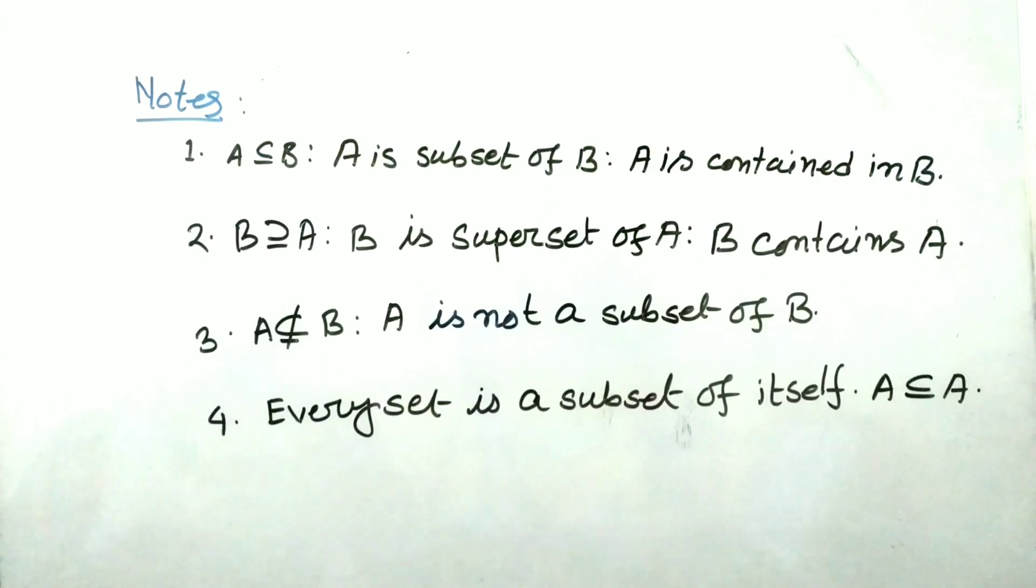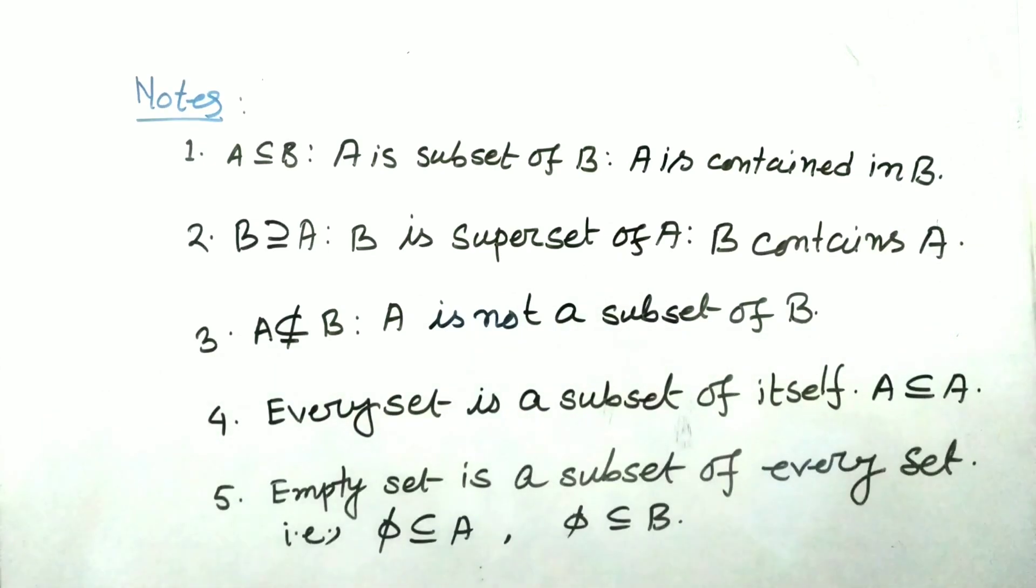Number 4 is very important. Here we say that every set is a subset of itself. That means if A is a set, so it is a subset of itself. Number 5, empty set is subset of every set that is phi is subset of A, phi is subset of B and we can say that phi is subset of any other set.